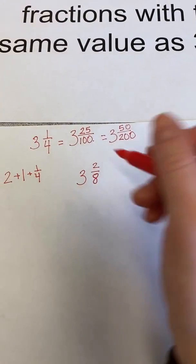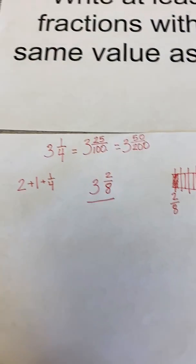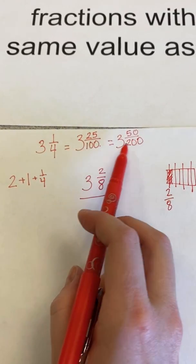And two of those are shaded in. So this mixed number of three and two-eighths would also be equivalent to this numeric expression, this mixed number as well.